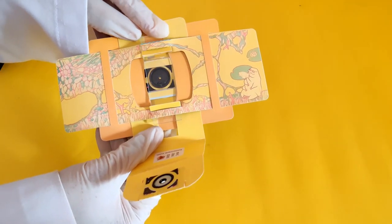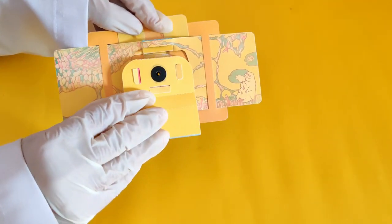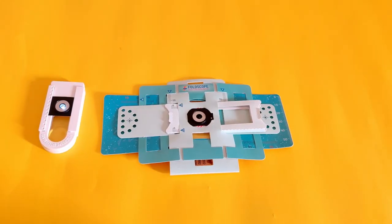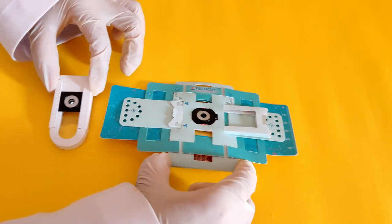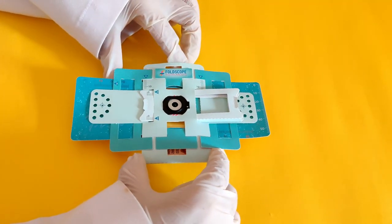Close the flap of the lens stage of the foldscope. Hold the foldscope up to a bright light and view through the lens.